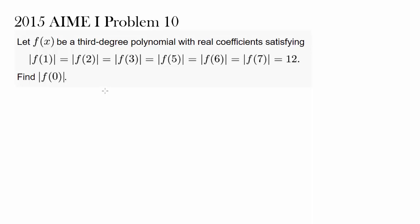Let's try out this question from 2015 AMC, problem 10. Let f of x be a third degree polynomial — so we have a cubic equation with real coefficients — satisfying the condition that the absolute values of f(1), f(2), f(3), f(5), f(6), and f(7) all equal 12. Notice we do not have f(4); we're skipping it. Let's keep this in mind.